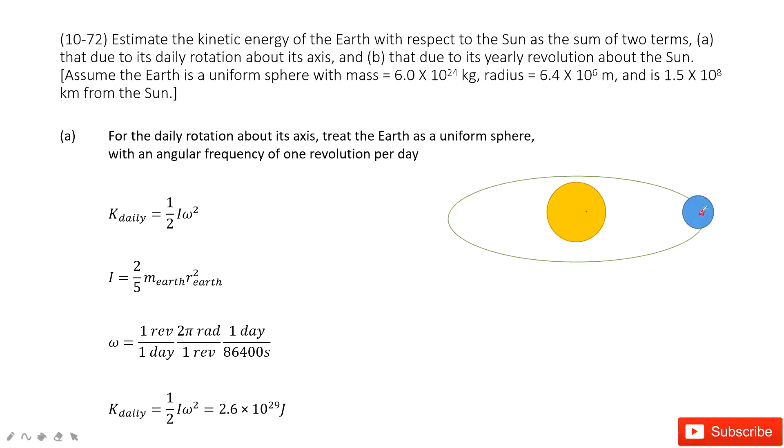And for daily rotational motion, we just need to consider the Earth. We know the Earth does rotational motion around its axis. So in this part, the kinetic energy is one-half I omega squared. This is in our textbook.